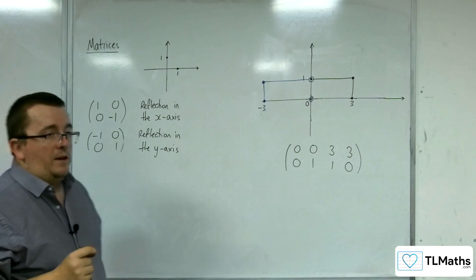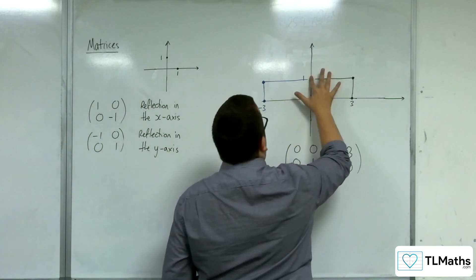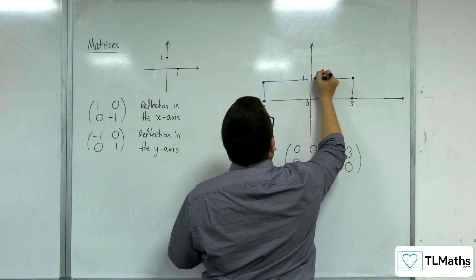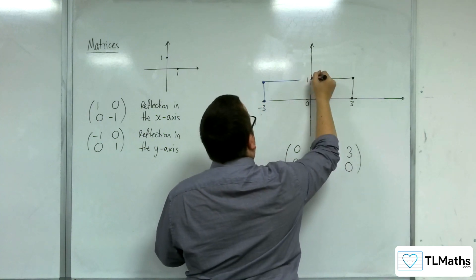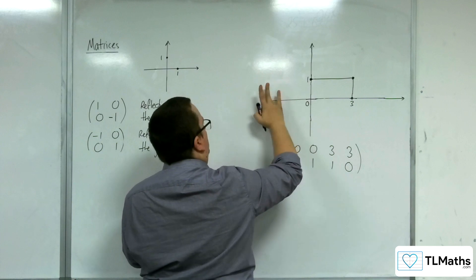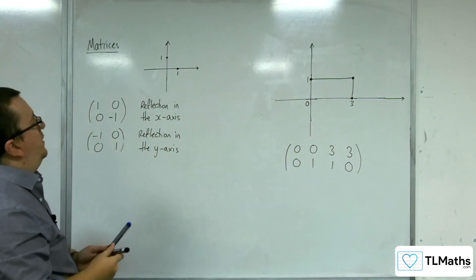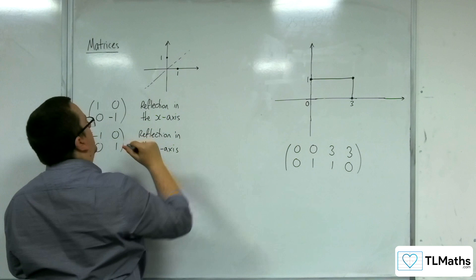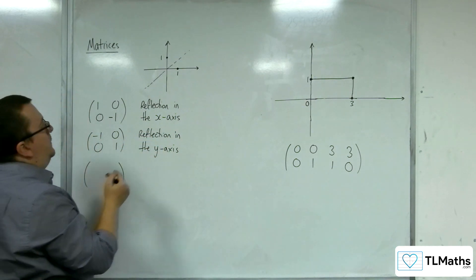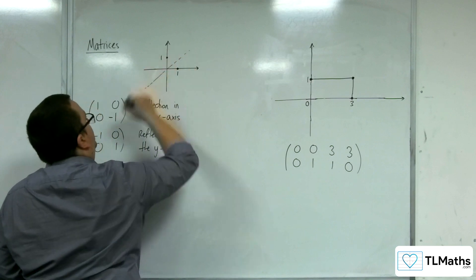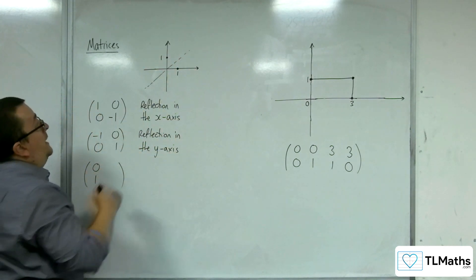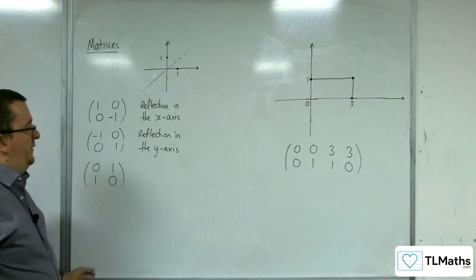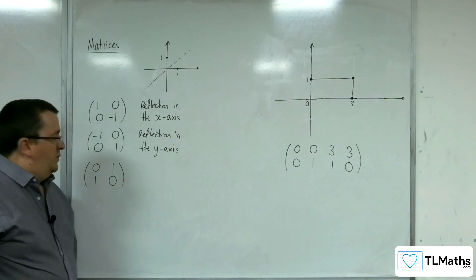There was one last one I mentioned: reflection in the line y equals x. That will be the last one we look at in this video. So if we reflect in the line y equals x, the point (1, 0) is going to get mapped to (0, 1), and the point (0, 1) is going to get mapped to (1, 0). So we'd be expecting the matrix (0, 1; 1, 0) to do the trick.